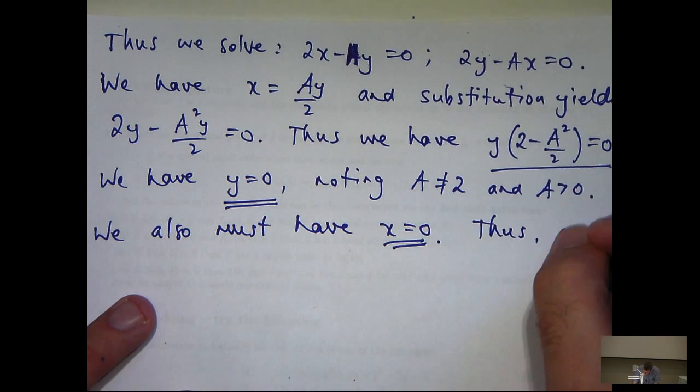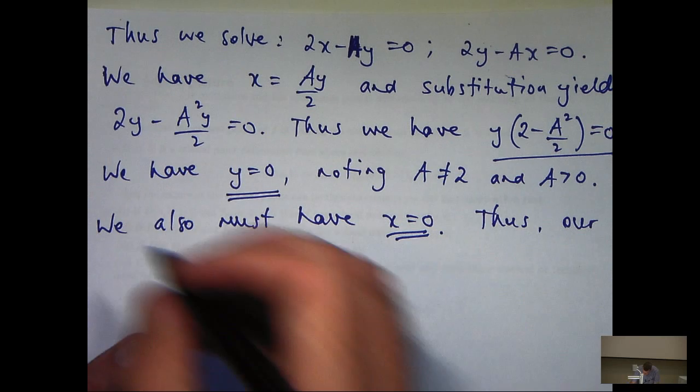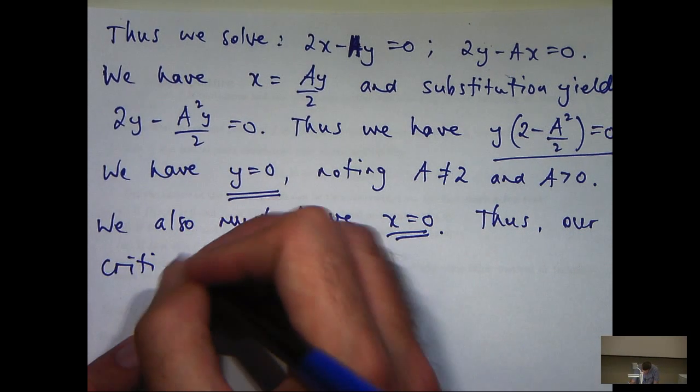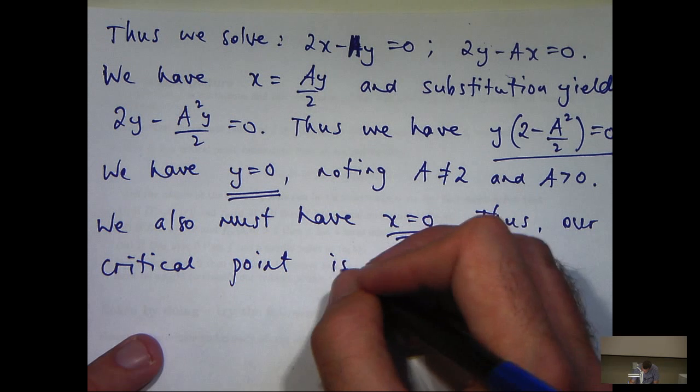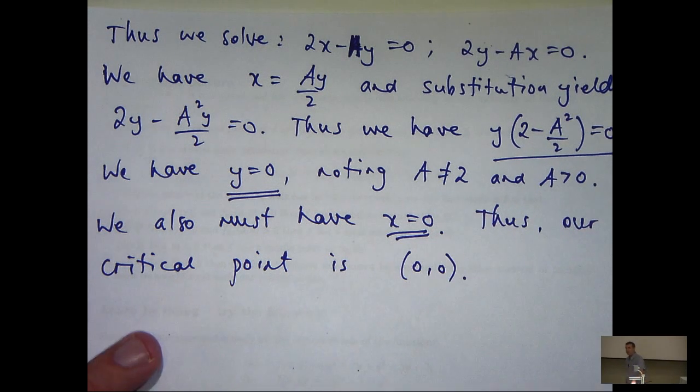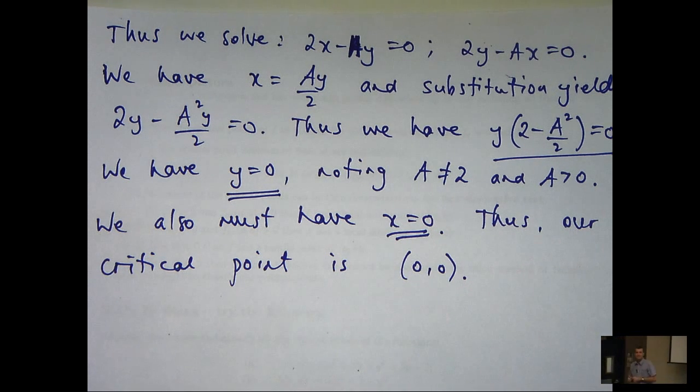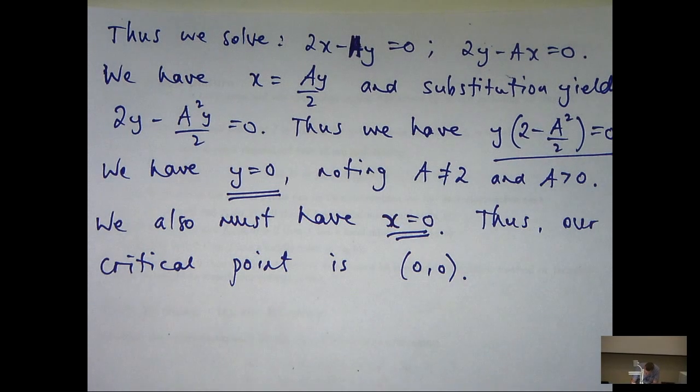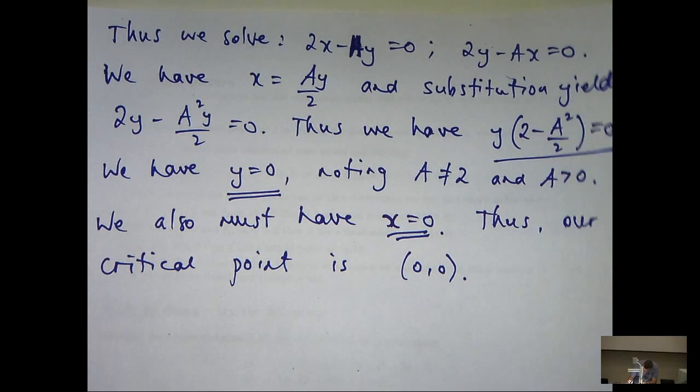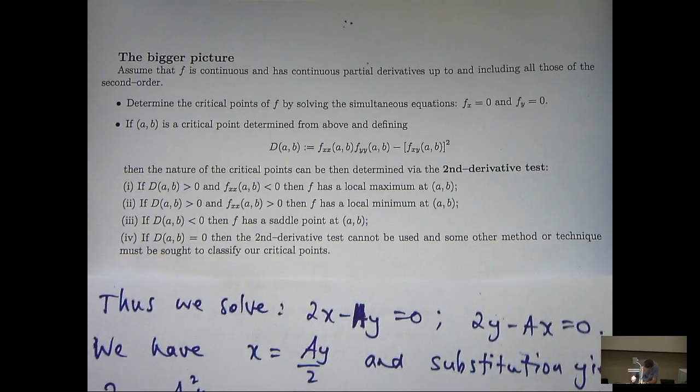Thus, our critical point is zero, zero. We've answered the first part of the question. We've determined the critical points. There's one of them and it occurs at zero, zero. Now the next thing is to classify the critical point. To do that, we're going to use an idea called the second derivative test.